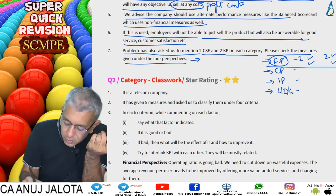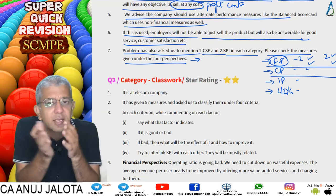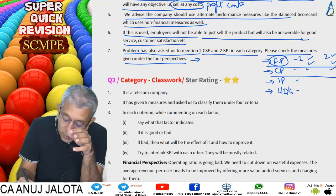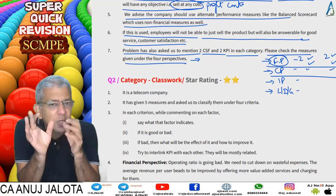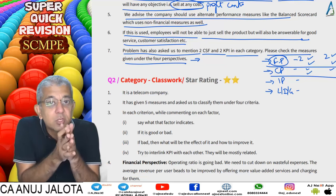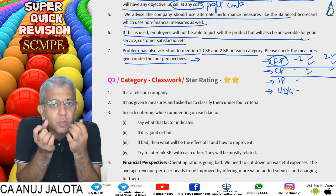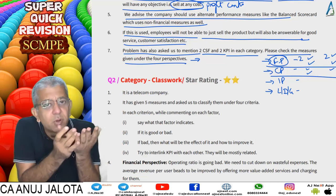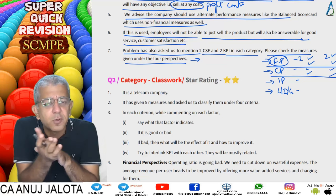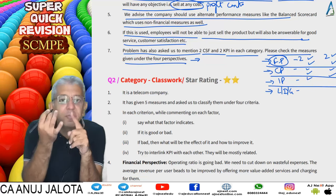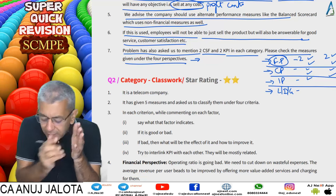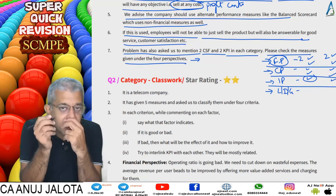You can also find savings against budget. For the customer perspective, the CSF could be to become the number one choice of customers — the KPI being units sold, since more units sold usually means customers are happy. A second CSF could be implementing a zero defect or zero recall policy — the KPI being number of cars recalled. Under the internal perspective, the KPI could be number of defective cars made, with an objective of zero defective goods.